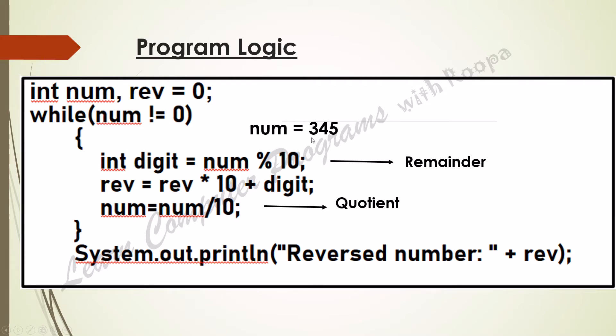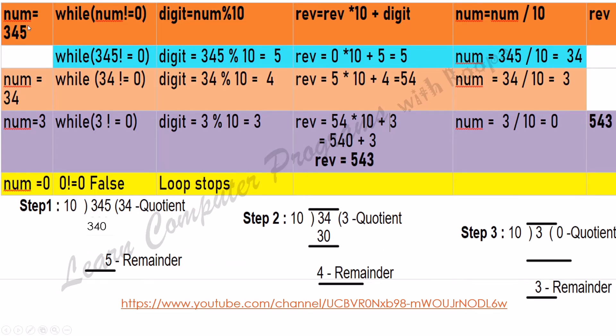Let us look at the steps of the while loop. Num equals 345, while num not equal to 0, digit equals num mod 10, and reverse equals reverse times 10 plus digit. The earlier program had asked you to just print the digit, but here we have made a small change: num equals num divided by 10. Let us go to the steps.